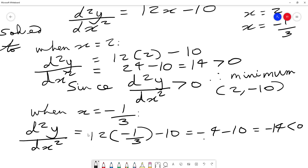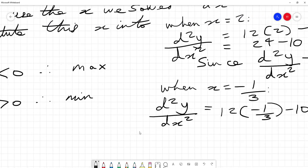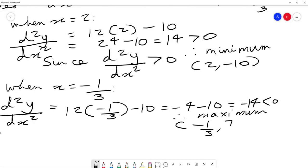So we say therefore it implies it's a maximum. We can say that the point (-1/3, 73/27) is now a maximum point.